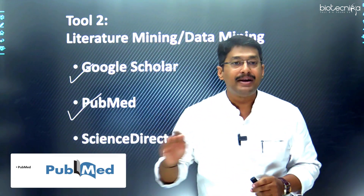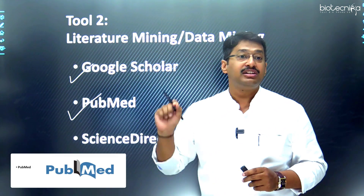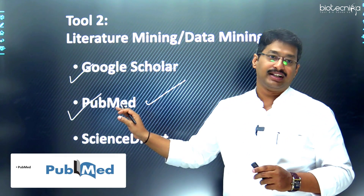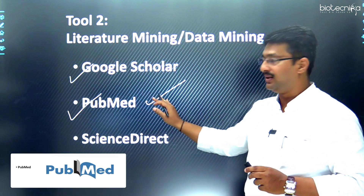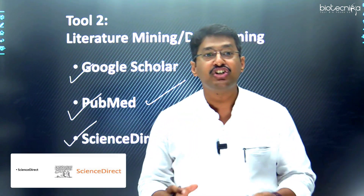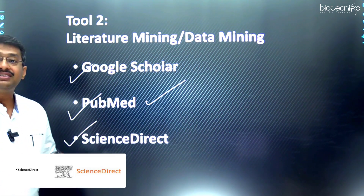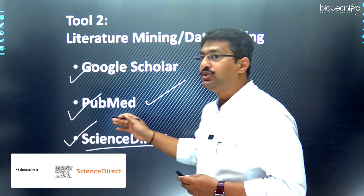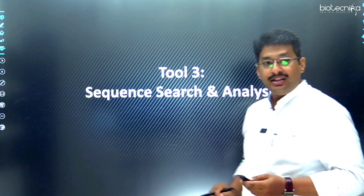The second important database is PubMed from NCBI. PubMed refers to Publication Medline — it is the world's largest literature database, and whatever information you require is deposited there. The third important database is Science Direct, where publishers such as Springer, Elsevier, and Wiley have deposited their data. I would ask you to look into literature mining using Google Scholar, PubMed, or Science Direct.